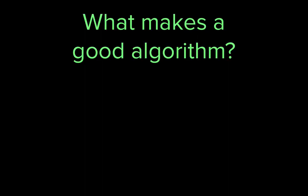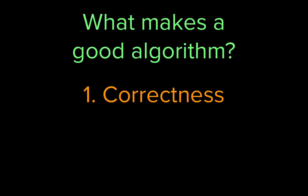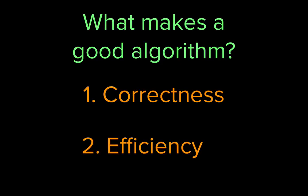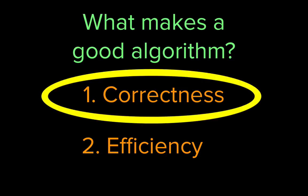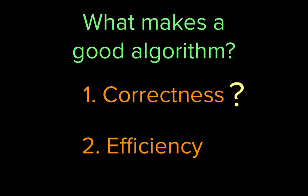Not all algorithms are created equal. So what makes a good algorithm? The two most important criteria are that it solves the problem, and that it does so efficiently. Most of the time, we want an algorithm to give us an answer that we know is always correct. Sometimes we can live with an algorithm that doesn't give us a correct answer or the best answer, because the only perfect algorithms we know for those problems take a really, really long time.